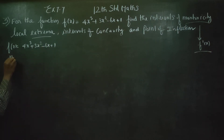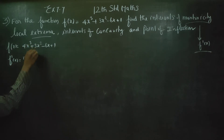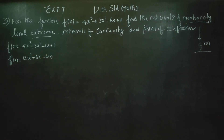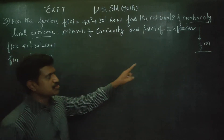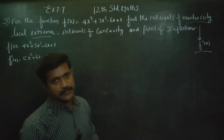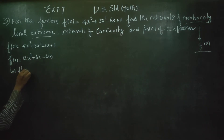First I will start differentiating this. f'(x) is equal to 12x² — bringing down the power: 4 × 3 = 12x², then 3 × 2 = 6x, minus 6. Differentiating the constant 1 gives 0. Now set f'(x) = 0 to find the critical numbers.